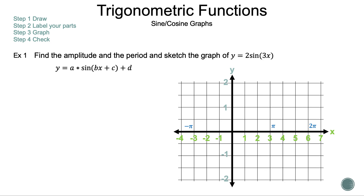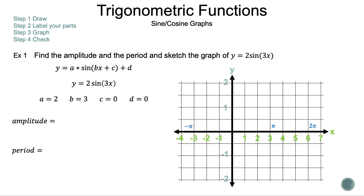Let's write down the general formula for sine to help us out, then write down the given equation y = 2 sine of 3x underneath. Using the general equation, a is equal to 2, b is equal to 3, c is equal to 0, and d is equal to 0. Let's write down what we need to find: the amplitude and the period. Remember, the amplitude is the absolute value of a. We need the absolute value because the amplitude is a distance, and distances are positive. The same goes with the period.